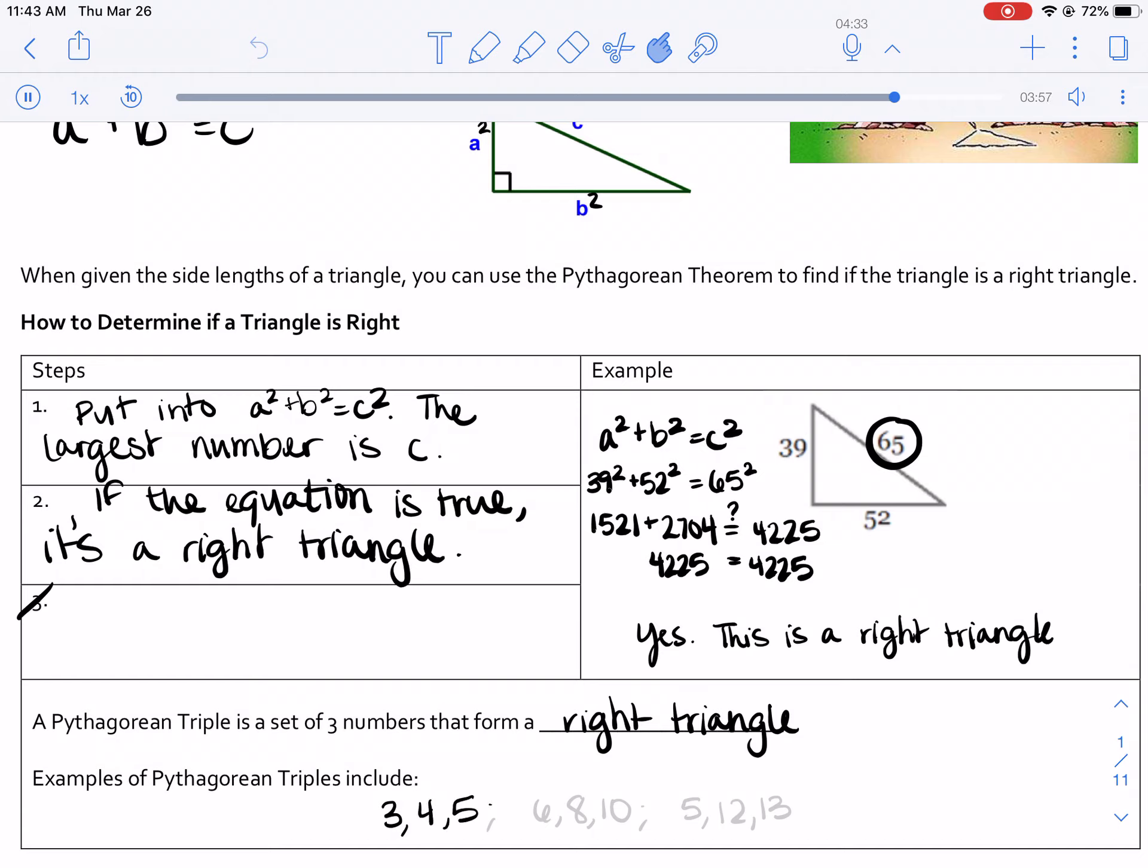And if you multiply all those numbers by the same number, it will also get a right triangle. So 6, 8, 10 would work. Or you could even do 9, 12, 15. Another one that's really good is 5, 12, 13.